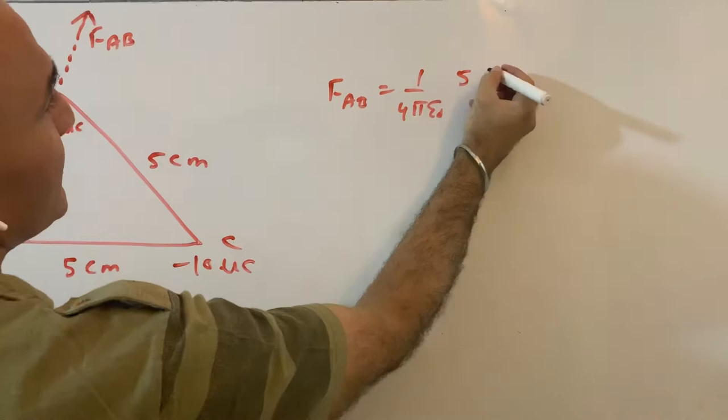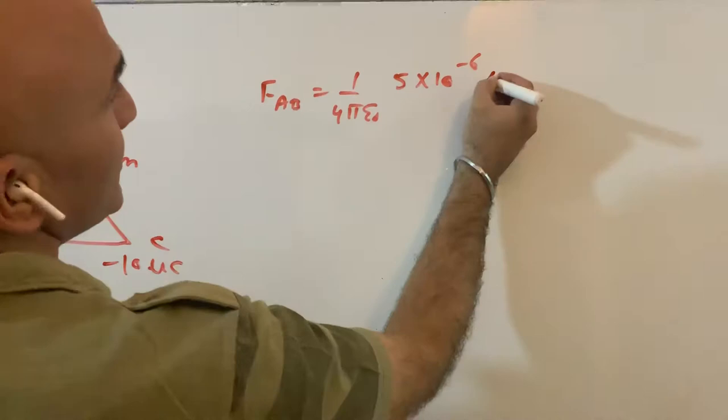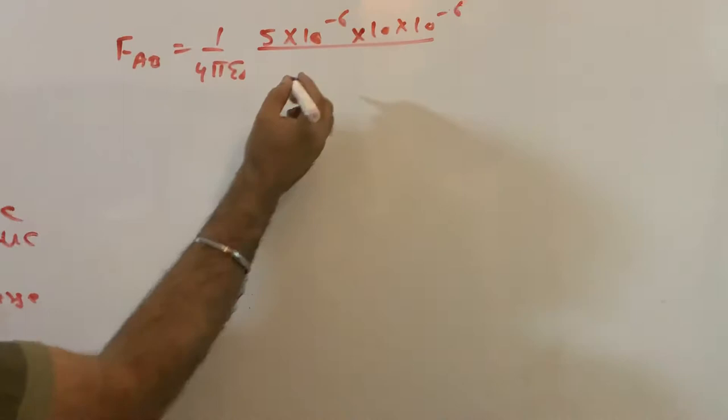One microcoulomb is 10^-6. Students will make mistakes in this. 5×10^-6 coulomb. The other charge is 10×10^-6 coulomb divided by distance. Distance was in centimeters, so 5×10^-2, whole squared.